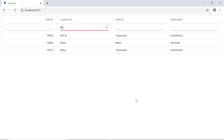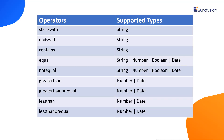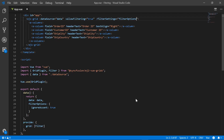Now we can see grid records are filtered with matching diacritic characters. Now let's see the various built-in filter operators available in Vue DataGrid and their supported types. The operators startsWith, endsWith, and contains support only string type. Operators like greaterThan, greaterThanOrEqual, lessThan, and lessThanOrEqual support number and date types. Equal and notEqual operators support string, number, boolean, and date types. In this example, I will show you how to use the startsWith operator for the customer ID column to filter grid records.